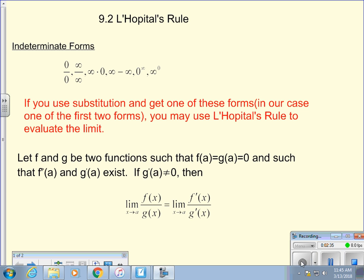Normally, when we take the derivative of a rational function, we use the quotient rule, f'g minus g'f over g squared. That does not apply to L'Hopital's rule. L'Hopital's rule says, if we have a rational function and we cannot find the limit by substitution because we get 0 over 0 or infinity over infinity, take the derivative of the numerator, take the derivative of the denominator, and try again.